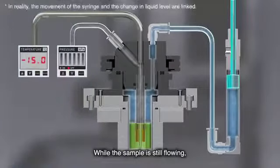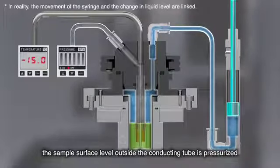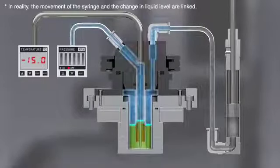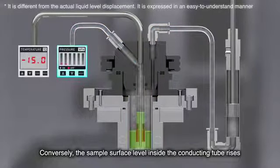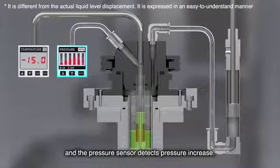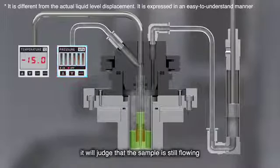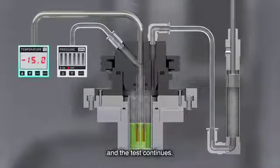While the sample is still flowing, the sample surface level outside the conducting tube is pressurized and drops slightly. Conversely, the sample surface level inside the conducting tube rises and the pressure sensor detects pressure increase. If the pressure sensor detects a certain pressure value, it will judge that the sample is still flowing and the test continues.